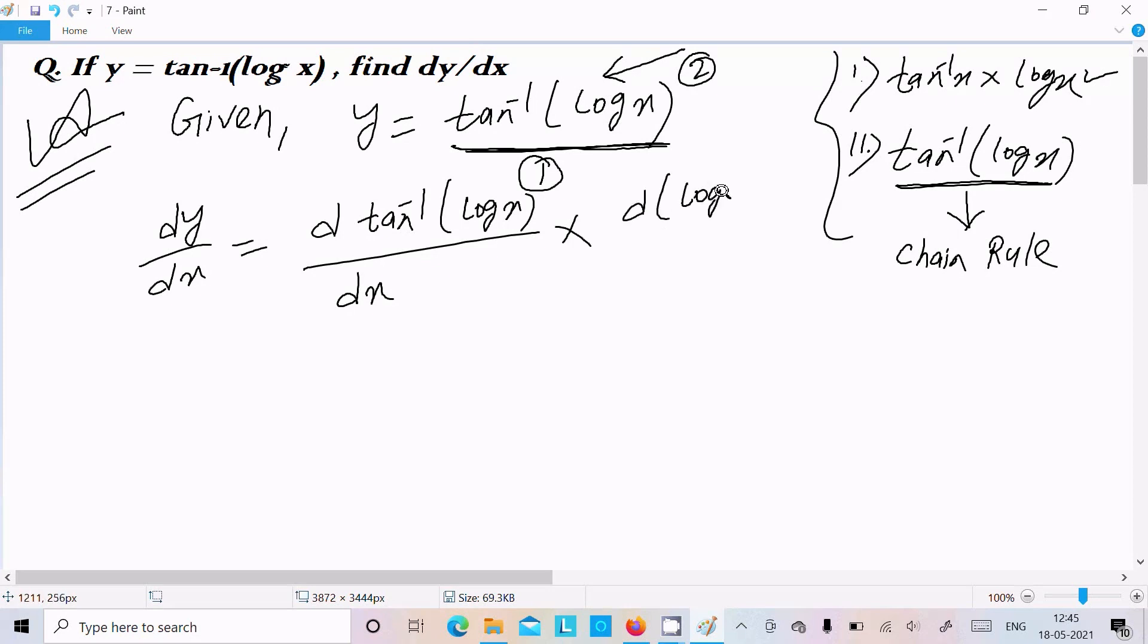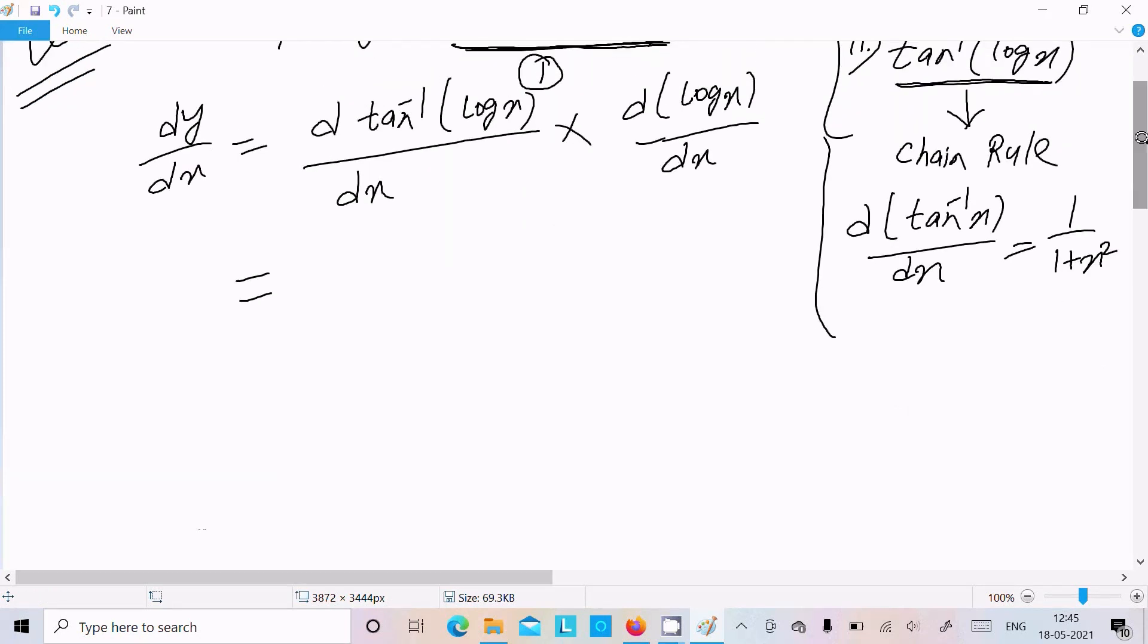Now here, the differentiation of tan inverse x is 1 by 1 plus x square. So we can write 1 by 1 plus log x divided by dx as square.